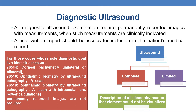For codes whose sole diagnostic purpose is biometric measurement, permanently recorded images are not required. Examples are 76514, which is corneal pachymetry unilateral or bilateral; 76516, ophthalmic biometry by ultrasound echography A-scan; and 76519, ophthalmic biometry by ultrasound echography A-scan with intraocular lens power calculations. Except these, the majority of diagnostic ultrasound codes need permanently recorded images with measurements and a final written report.